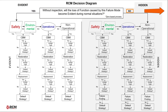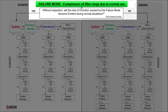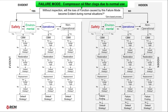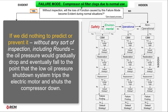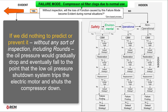Let's look at a couple of examples. Let's say our failure mode is: compressor oil filter clogs due to normal use. Without inspection, will the loss of function caused by this failure mode become evident during normal situations? Yes. If we did nothing to predict or prevent it, without any sort of inspection, including rounds, the oil pressure would gradually drop and eventually fall to the point that the low oil pressure shutdown system trips the electric motor and shuts the compressor down. So in the context of RCM, this failure mode is considered evident. We move to the left on the Decision Diagram.